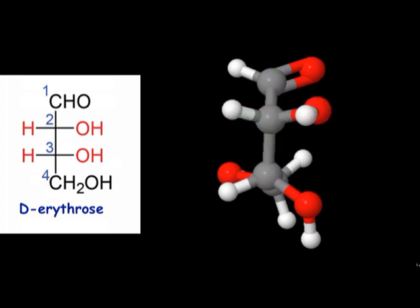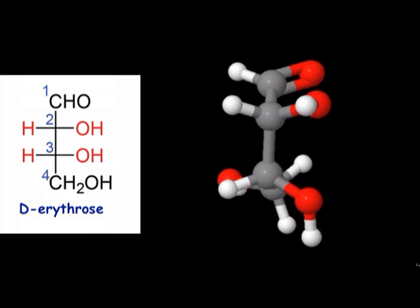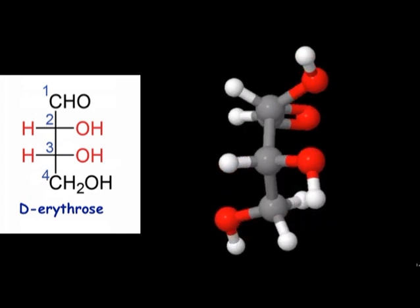Moving to the second stereocenter, we see that if we roll the molecule over slightly, the horizontal groups on this carbon atom are coming out towards us, while the vertical groups are going back away from us. Both hydroxyl substituents on the two stereocenters are pointing to the right, which is consistent with the given Fischer projection.